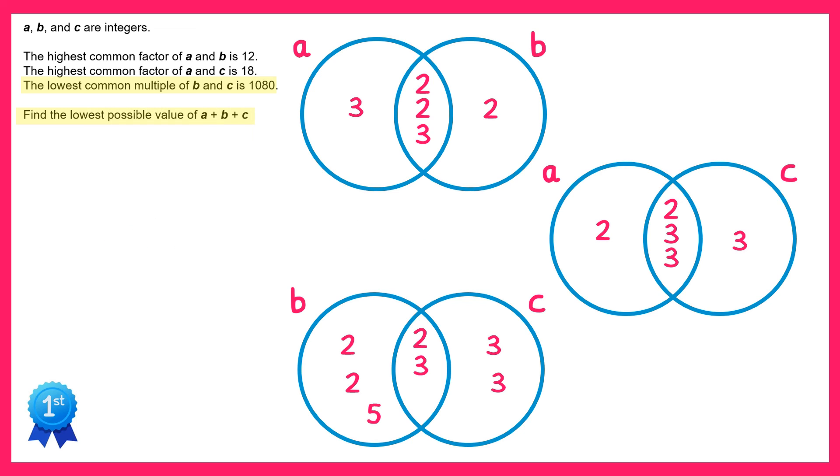All we need to do now is work out what all of our numbers A, B, and C are. So A will be 2 times 2 times 3 times 3, B will be 2 times 2 times 2 times 3 times 5, and C will be 2 times 3 times 3 times 3. If you work all of these out, you get A is 36, B is 120, and C is 54.